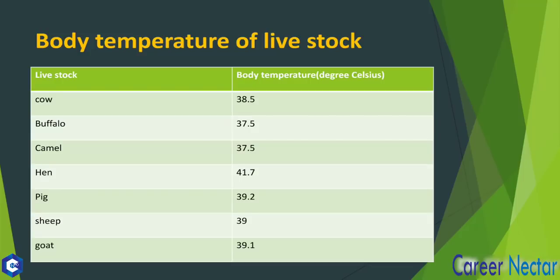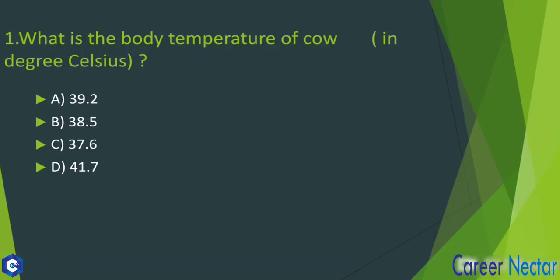All the important livestock are given here. You can see: cow, buffalo, camel, hen, pig, sheep, and goat, along with their corresponding body temperatures in degrees Celsius. Cow is 38.5°C, buffalo is 37.5°C, camel is 37.5°C, hen is 41.7°C, pig is 39.2°C, sheep is 39°C, and goat is 39.1°C. These are the body temperatures of the different livestock.